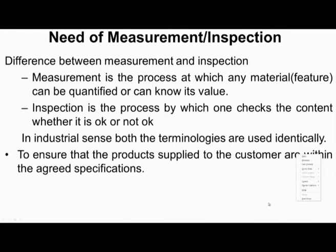Let us understand the difference between measurement and inspection. In the manufacturing area, we produce components with features like depth, length, breadth, surface finish, parallelism, etc. — all of which must be measured and quantified; this process is called measurement. Sometimes we only need to inspect work pieces to accept or reject them without measuring the physical variable — this activity is known as inspection. In the industrial sense, both terminologies are often used interchangeably.